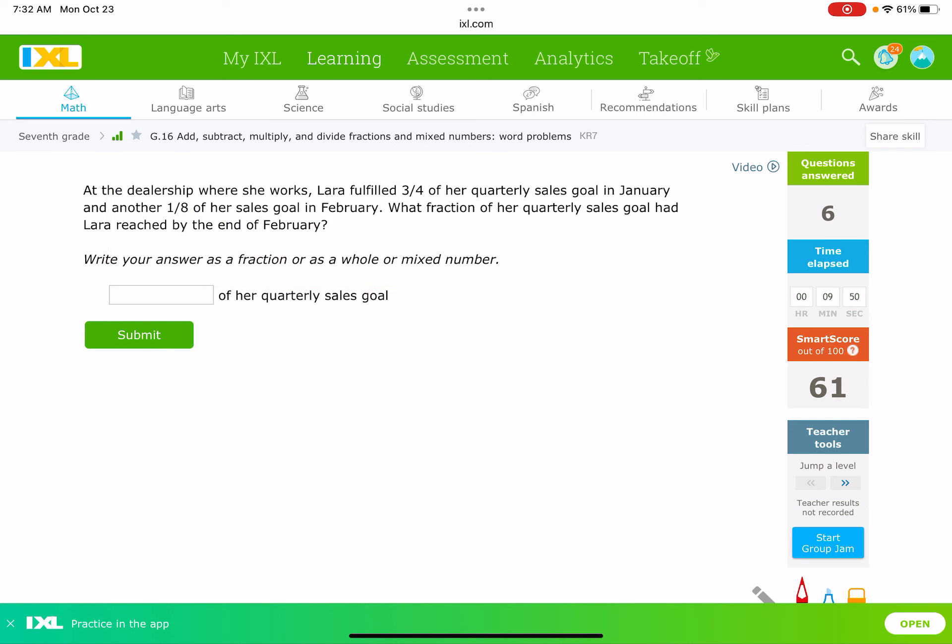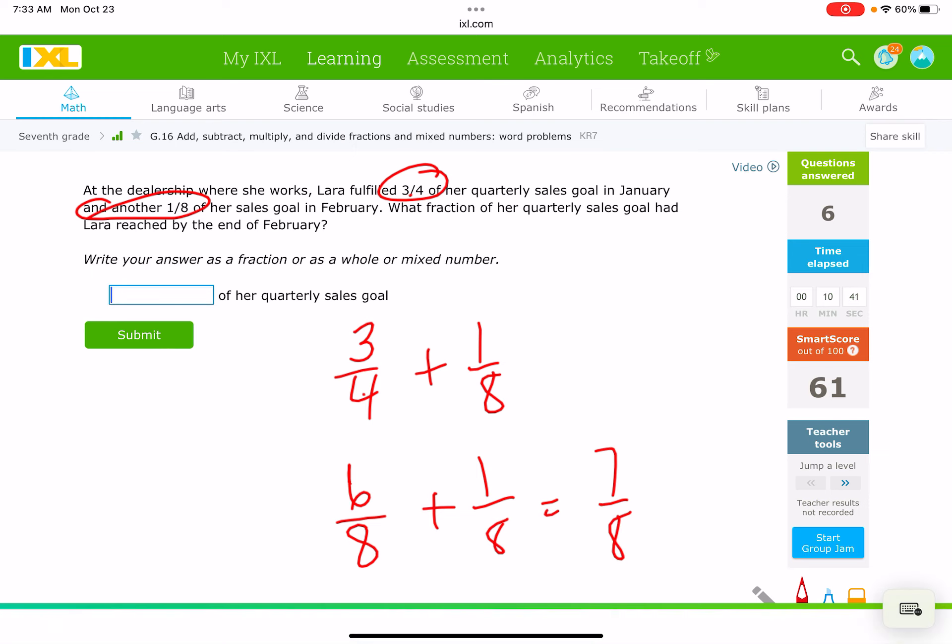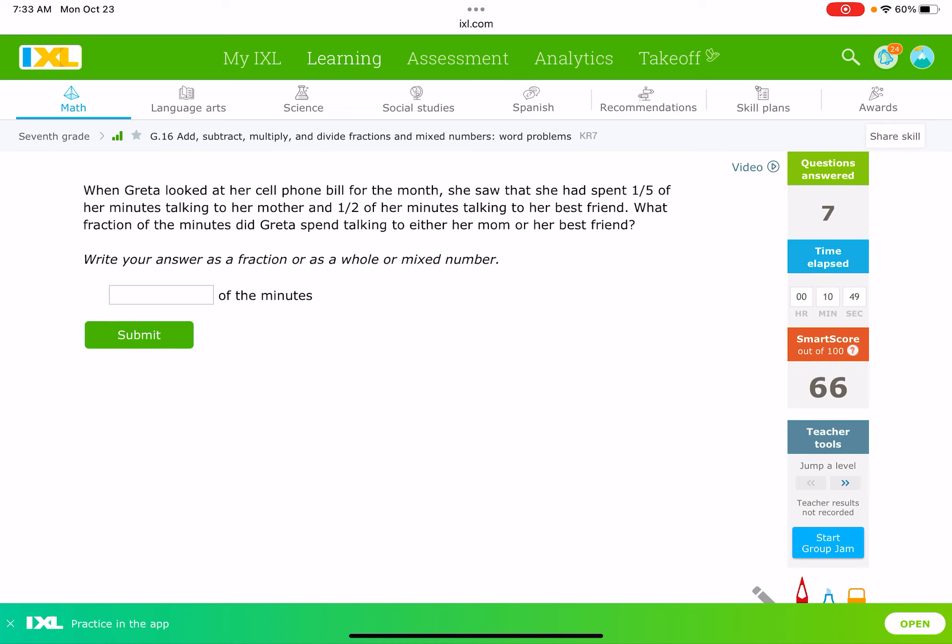Next one. At a dealership where she works, Laura fulfilled ¾ of her quarterly sales goal in January and another ⅛ in February. What fraction had she reached by the end of February? There's not really clue words here, but they're saying she did ¾ and another ⅛, and we want to know by the end what she has. So, that tells us right there that we're adding. So, we're going to do ¾ plus ⅛. And again, we got to get a common denominator, but I know 4 goes into 8. So, ¾ is the same thing as ⅝, because I just double the 4, double the 3, and ⅝ plus ⅛ is easily ⅞. So, don't make yourself do all that extra work and have to simplify later if you can find the least common denominator.